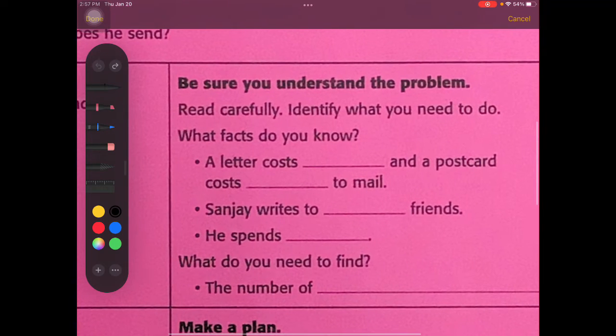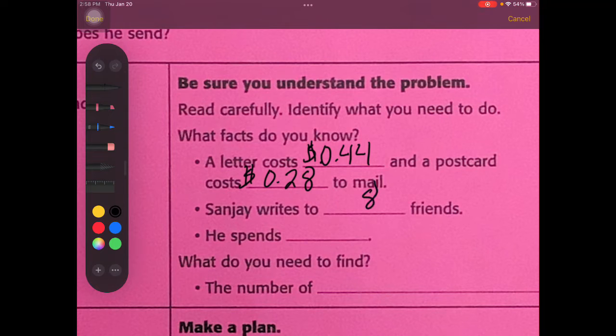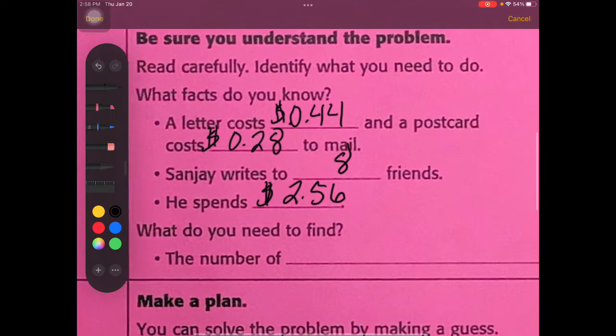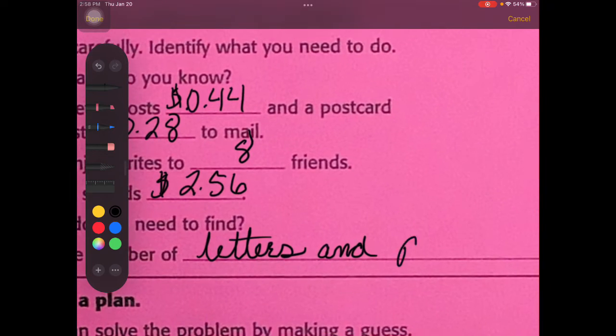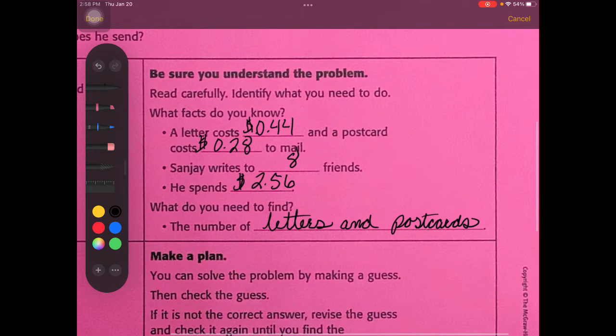This is what you need to carefully do. You read carefully, you identify what you need to do. What facts do you know? We know for a fact that a letter costs 44 cents, and that a postcard costs 28 cents to mail. Sanjay writes to eight friends, and the total cost is $2.56. What do we need to find? We need a number of letters and postcards.